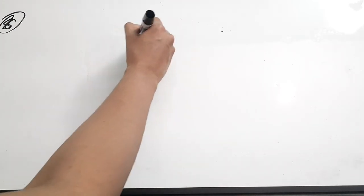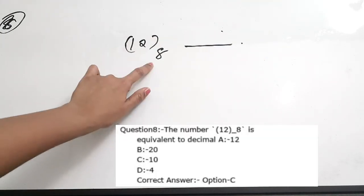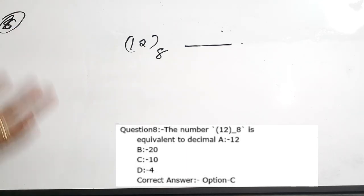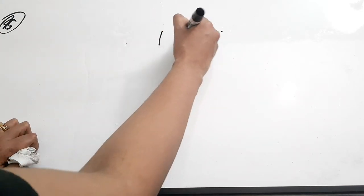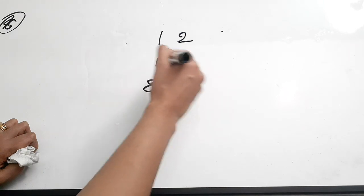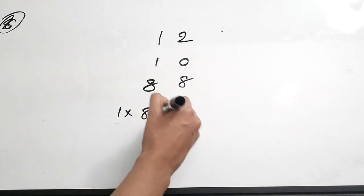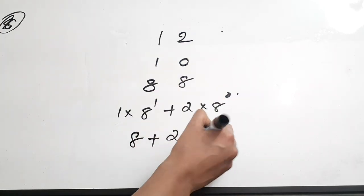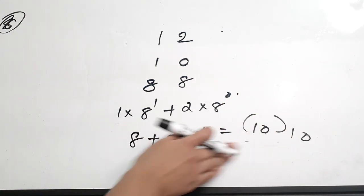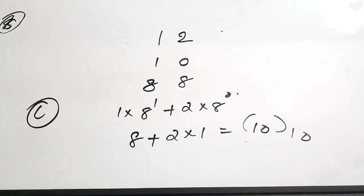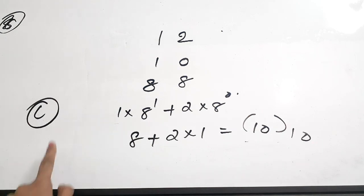Eighth question — again from number systems: the number 12 in base 8 in decimal is dash. Base 8 means it is an octal number. To convert: 1×8¹ + 2×8⁰ = 8 + 2 = 10. So 12 in octal equals 10 in decimal. Correct answer is option C. This is the last question discussed in this video; the next set of questions will be covered in the next video.